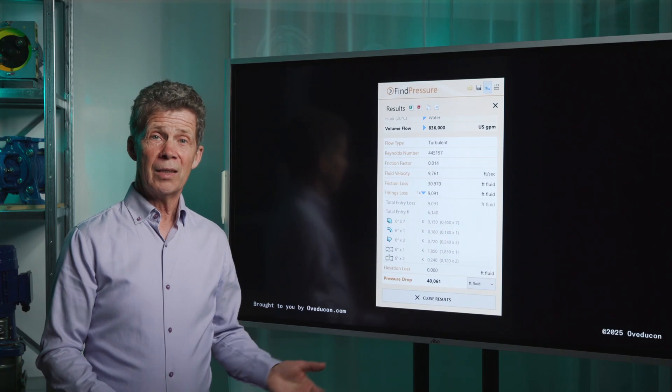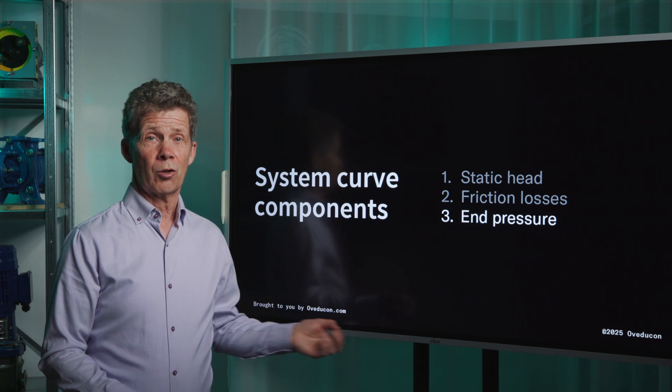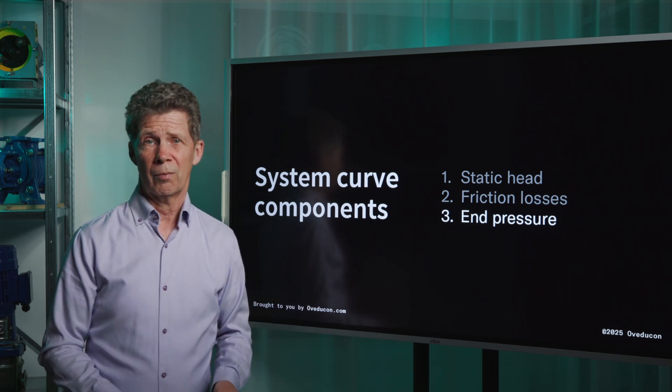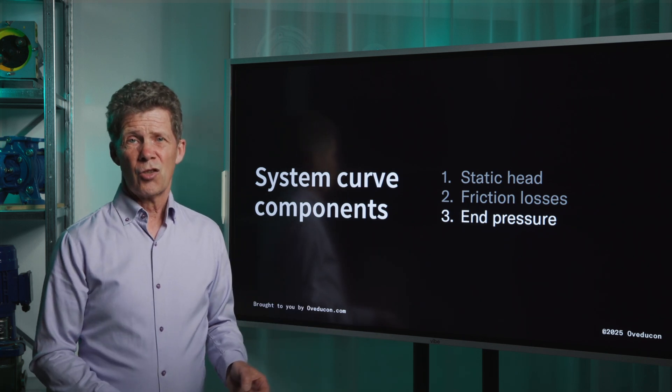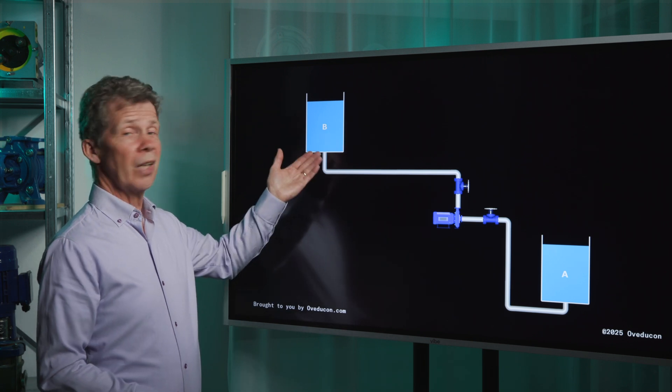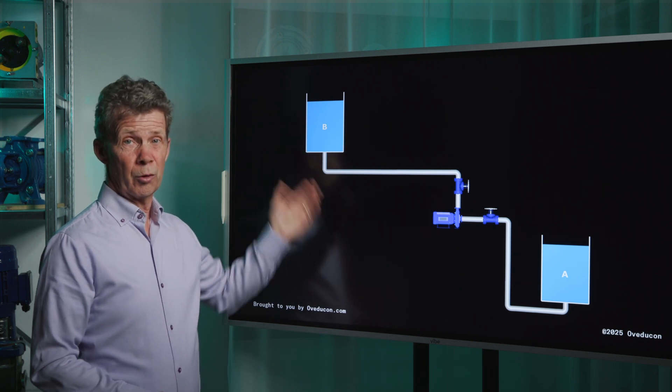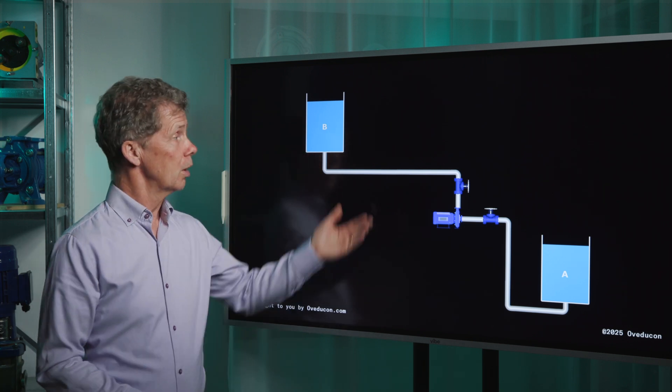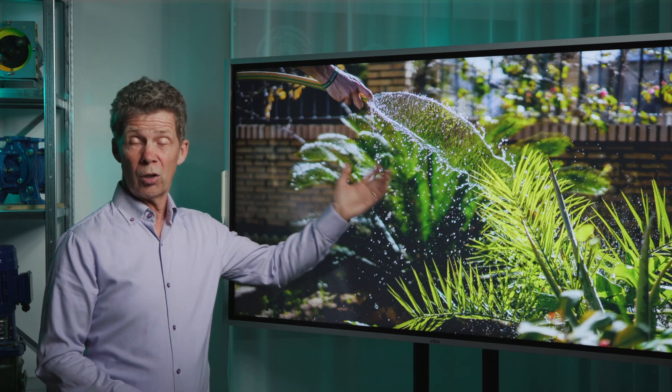It can be bought or it can be found on the internet. Finally, the last component: end pressure. Sometimes you want a certain pressure at the end of your pipe. For example, if you use a garden hose. This pressure at the end of your pipe is called end pressure.